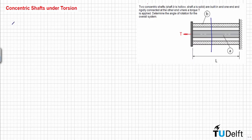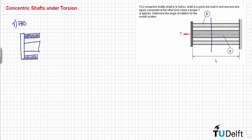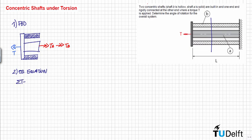We can start as usual by drawing the free body diagram. We cut the structure at this point, and we have here the applied torque T, and of course the internal torques Ta and Tb. From the equilibrium equations, we know that the sum of torques at any point of the structure must be equal to zero. From this equation we have that Ta plus Tb is equal to T.